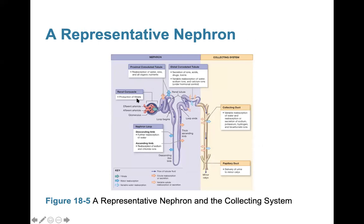In the renal corpuscle, filtrate is produced — the fluid that enters the nephron from the blood. In the PCT, reabsorption of water, ions, and all organic nutrients occurs. In the nephron loop, further reabsorption of water and reabsorption of sodium and chloride occurs. In the DCT, secretion of ions, acids, drugs, and toxins takes place, along with variable reabsorption of water, sodium, and calcium ions based on hormonal control. The collecting system follows.